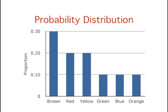It is called a probability distribution because if you choose an M&M at random, the probability of getting, say, a brown M&M is equal to the proportion of M&Ms that are brown, 0.30.